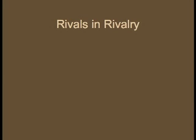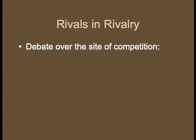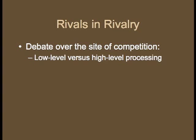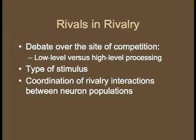In the study of the neural mechanisms underlying binocular rivalry, there have been some points of contest. First of all, there is some debate over the site of competition. Does it take place at low levels of processing, such as the lateral geniculate nucleus or monocular neurons of the primary visual cortex? Or does it take place at higher levels of processing, such as the temporal lobe? There is also debate over the type of stimulus. Finally, what types of interactions occur between neurons? Is it feedback from binocular to monocular neurons, or is it lateral feedback between monocular neurons?